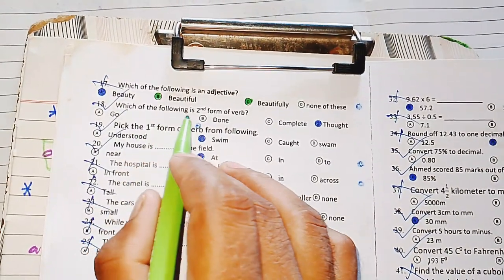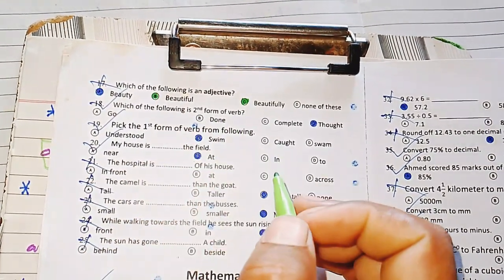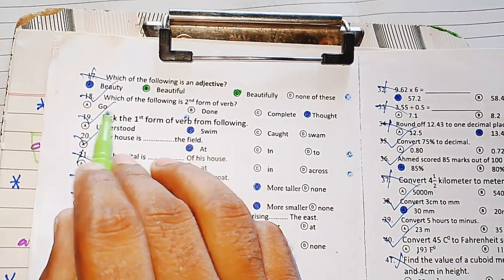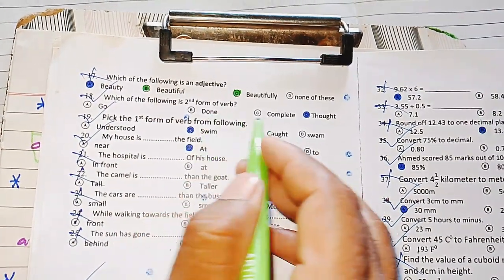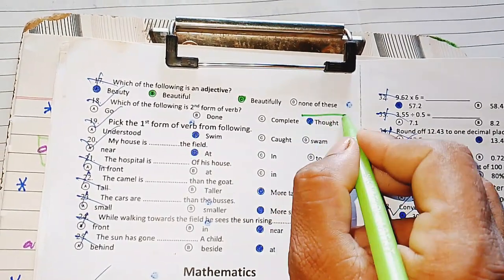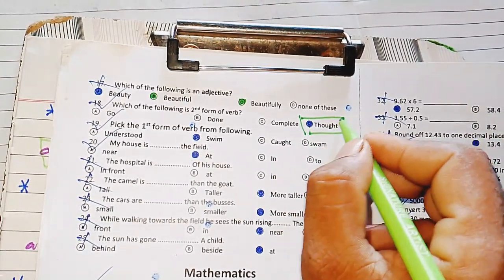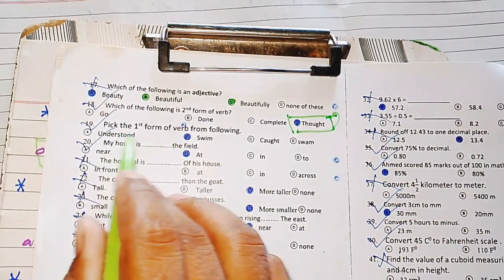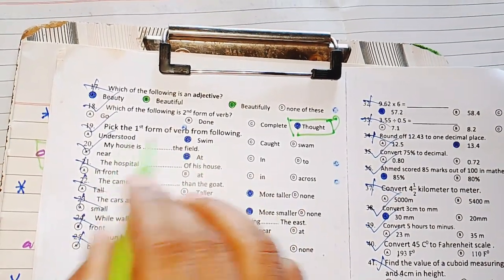Which one of the following is second form of verb? Second form of verb is past, which one is present, then third form of verb is complete. First form of verb, third form is second form and third form is used. Pick the first form of verb.